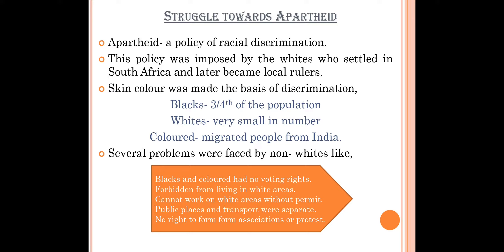Whites had all well-equipped facilities whereas the facilities for blacks were very poor or nonexistent. These were the problems faced by the natives of South Africa. As for why they didn't oppose — apart from all these problems, they were also not allowed to protest against this terrible treatment being given by the whites. So they did not protest because it was not permitted at that time.